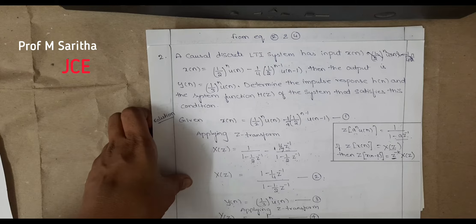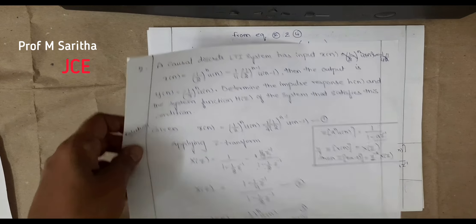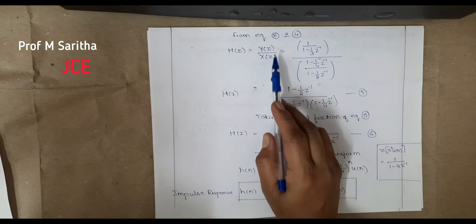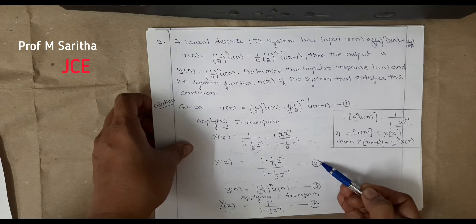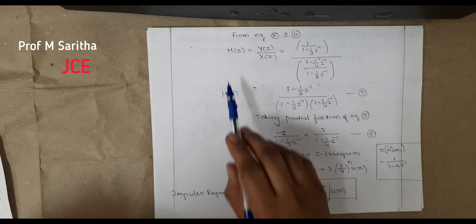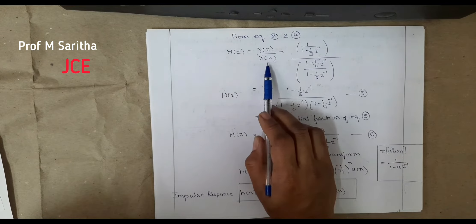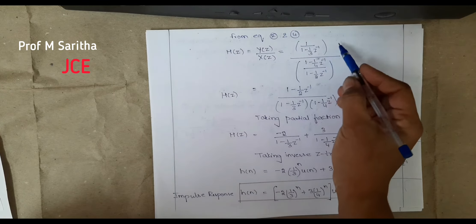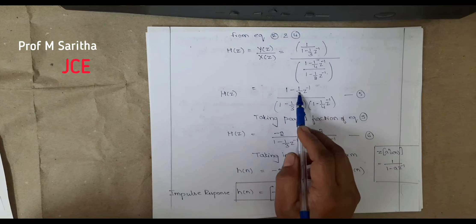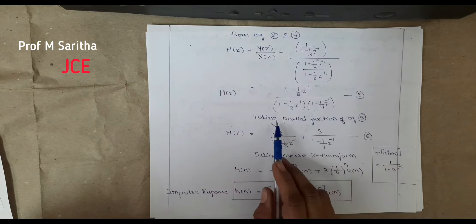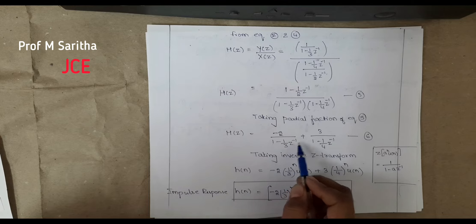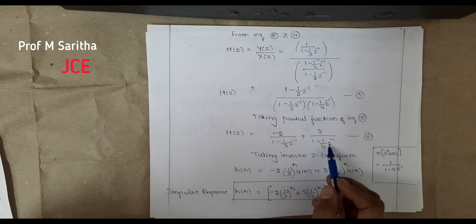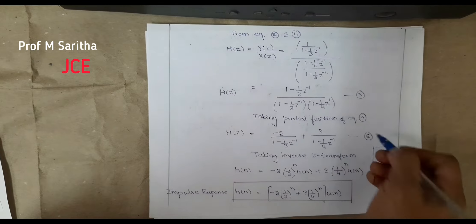y(n) = (1/3)^n u(n), so applying the Z-transform: Y(z) = 1/(1 − (1/3)z^(−1)). H(z) = Y(z)/X(z), which is Y(z) divided by equation 2. Simplifying and taking partial fractions: H(z) = (−2)/(1 − (1/3)z^(−1)) + 3/(1 − (1/4)z^(−1)). Let us take this as equation 6.